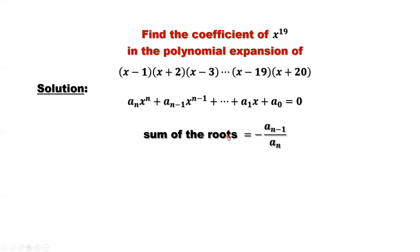Sum of the roots — that means sum of all the roots, zeros of this polynomial — equals negative a_{n-1}, this second leading constant, divided by a_n, the leading constant. We assume a_n is not zero, and n is the degree of the polynomial. This is a very important and useful result in solving problems.